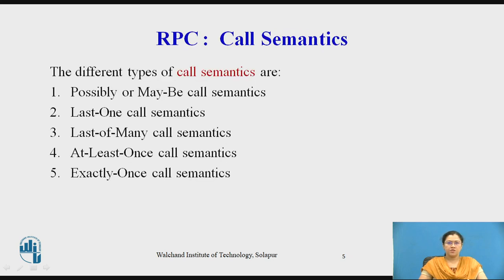In this topic, we will require some call semantics of RPC. Here is the list of different call semantics: possibly or maybe call semantics, last one call semantics, last of many call semantics, at least once call semantics, and exactly once call semantics. These are the semantics we will require for the further session.